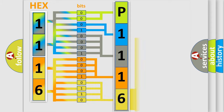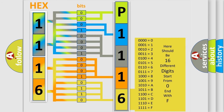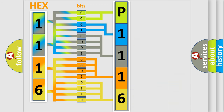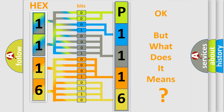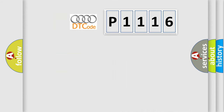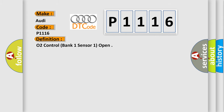A single byte conceals 256 possible combinations. We now know in what way the diagnostic tool translates the received information into a more comprehensible format. The number itself does not make sense if we cannot assign information about what it actually expresses. So, what does the diagnostic trouble code P1116 interpret specifically for Audi car manufacturers? The basic definition is: O2 control, bank 1, sensor 1, open.